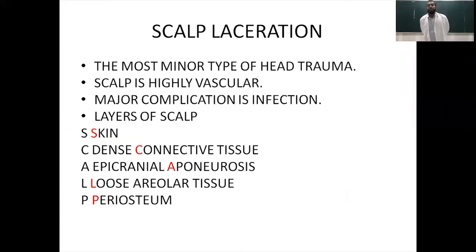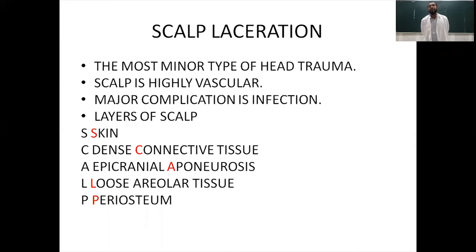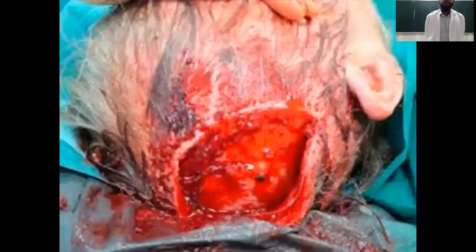Scalp lacerations are the most minor type of head trauma. The scalp is a highly vascular area and the major complication is infection. The layers of the scalp can be remembered using the mnemonic SCALP: S for skin, C for connective tissue, A for aponeurosis, L for loose areolar tissue, and P for periosteum. This is an image of a simple scalp laceration.